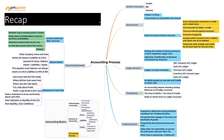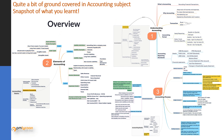To quickly recap the accounting process section: we started by identifying transactions and learned about journals — what they mean and how to record entries using the rules of journal recording. We then looked at ledger accounts with examples, followed by the trial balance to match totals of credits with debits. We covered trading account concepts, and then moved on to the three financial statements: the income statement, balance sheet, and cash flow statement — discussing their importance, how to generate them, and examples of each.